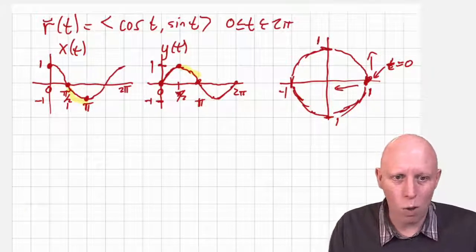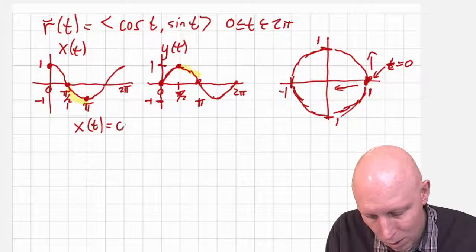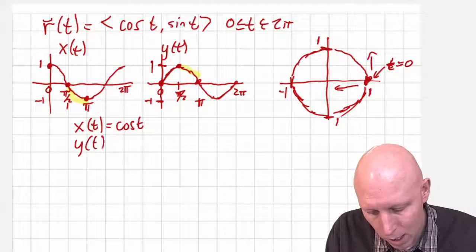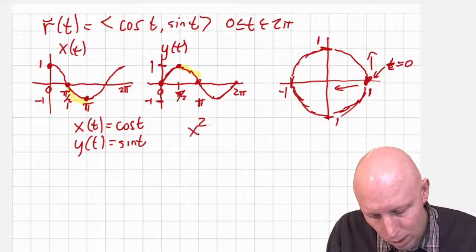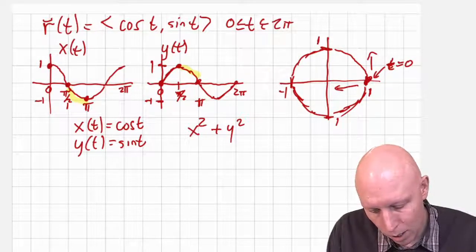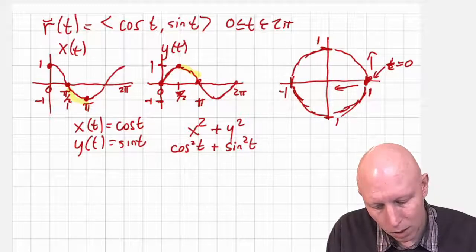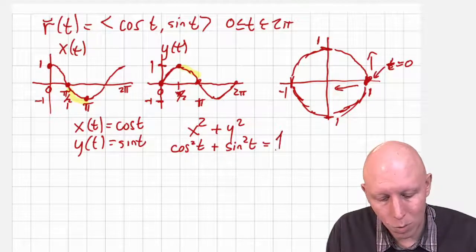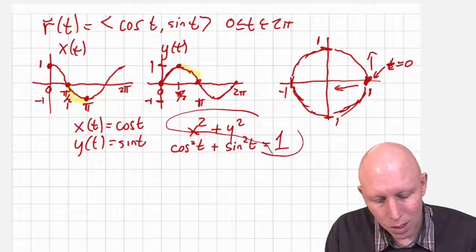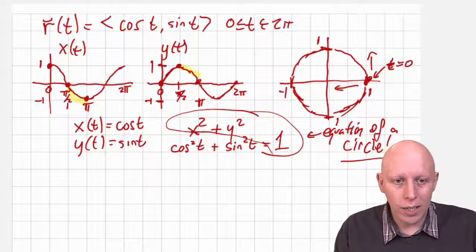Is there a good reason why it gives us a circle? Well, x of t is equal to cosine of t and y of t is equal to sine of t. What do we know about x squared plus y squared? x squared is cosine squared of t, y squared is sine squared of t, and cosine squared plus sine squared is always equal to one. So x squared plus y squared equals one — this is the equation of a circle!